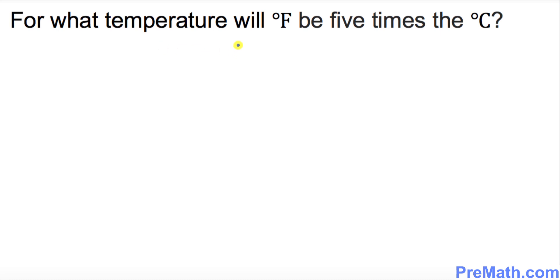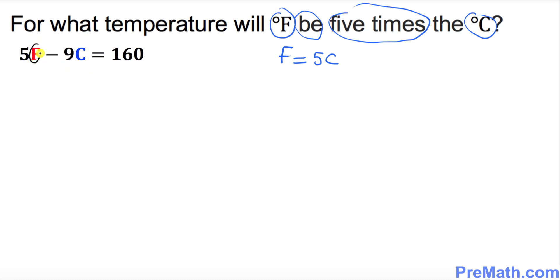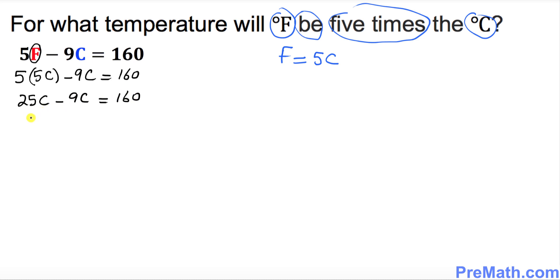Finally, we'll work on this word problem. It says: for what temperature will degrees Fahrenheit be five times degrees Celsius? So that gives us F equals 5C. Using the formula and replacing F by 5C, I put down 5 times 5C minus 9C equal to 160. That gives you 16C equal to 160.